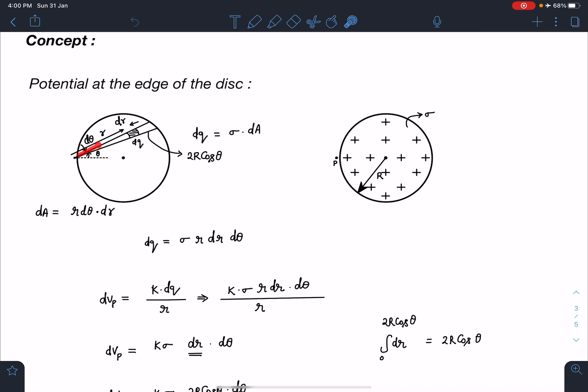But if I integrate dr first, my limit of this element will go from here to here. This length is actually 2r*cos(theta).